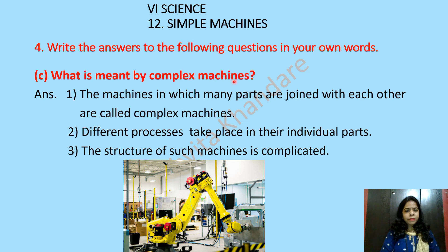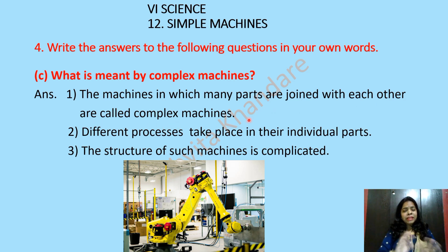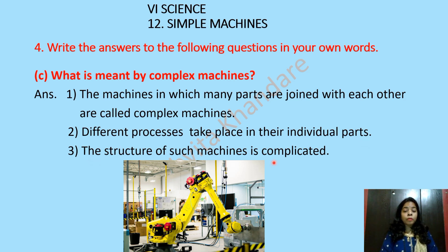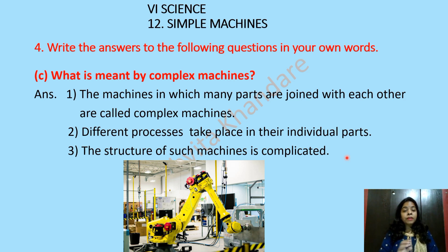What is meant by complex machines? The machines in which many parts are joined with each other are called complex machines. Different processes take place in their individual parts and many parts work together. The structure of such machines is complicated. It is very difficult to understand the structure of complex machines and we really need a technician to repair them if something goes wrong.